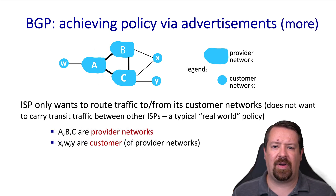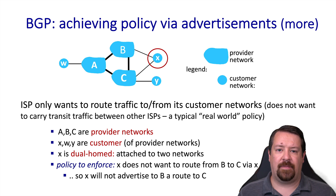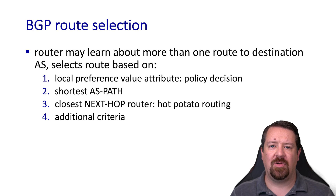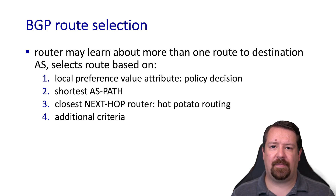Another terminology is provider networks versus customer networks. X, being dual-homed to two different providers, does not want to route traffic between B and C — it only wants to send its own traffic and receive traffic destined for its prefixes. So X will have filtering in place so that paths learned through B are not advertised to C and vice versa. When a BGP router receives more than one path to a given destination, it looks through a series of criteria: the local preference value, the shortest AS path, hot potato routing for the shortest path out of the network, and any other arbitrary policy criteria that may be configured.